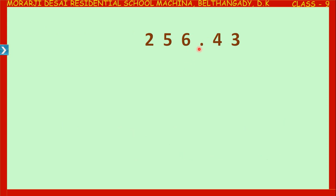Now look at this number. What difference do you observe between a whole number and this number? Here we have a point — this point is called a decimal point, and this number is called a decimal number or decimal. Two hundred fifty-six point four three is a decimal. Decimals are numbers having a decimal point.